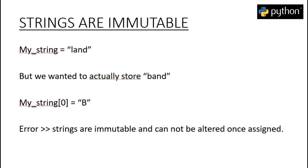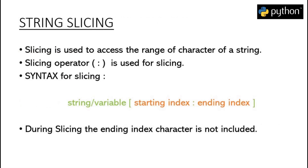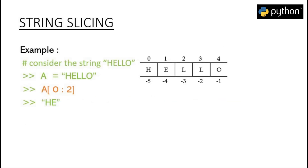Python also allows us to access a range of characters using the bracket notation, which is known as string slicing. We write the name of the variable, and in the bracket notation we write the starting index followed by a colon operator and the ending index. One important thing to note about string slicing is that the element at the ending index will not be included in the output. For example, slicing 'hello' from index 0 to 2 gives 'he' as output, not 'hel', because the element at index 2 is excluded.